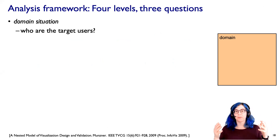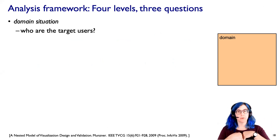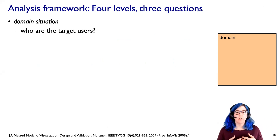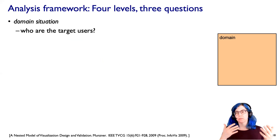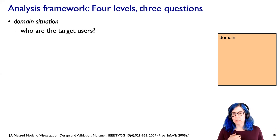Let's start with the top level, the domain level — what I'll call the domain situation. This is where we ask: who are the target users that we might be designing a visualization for? What particular problems do they have? What data do they have, and what questions are they asking about that data? What specialized knowledge do they have? This could be someone in finance, in physics, or in biology — they might have very different language for talking about what might at the core be really very similar problems from an abstract visualization point of view.